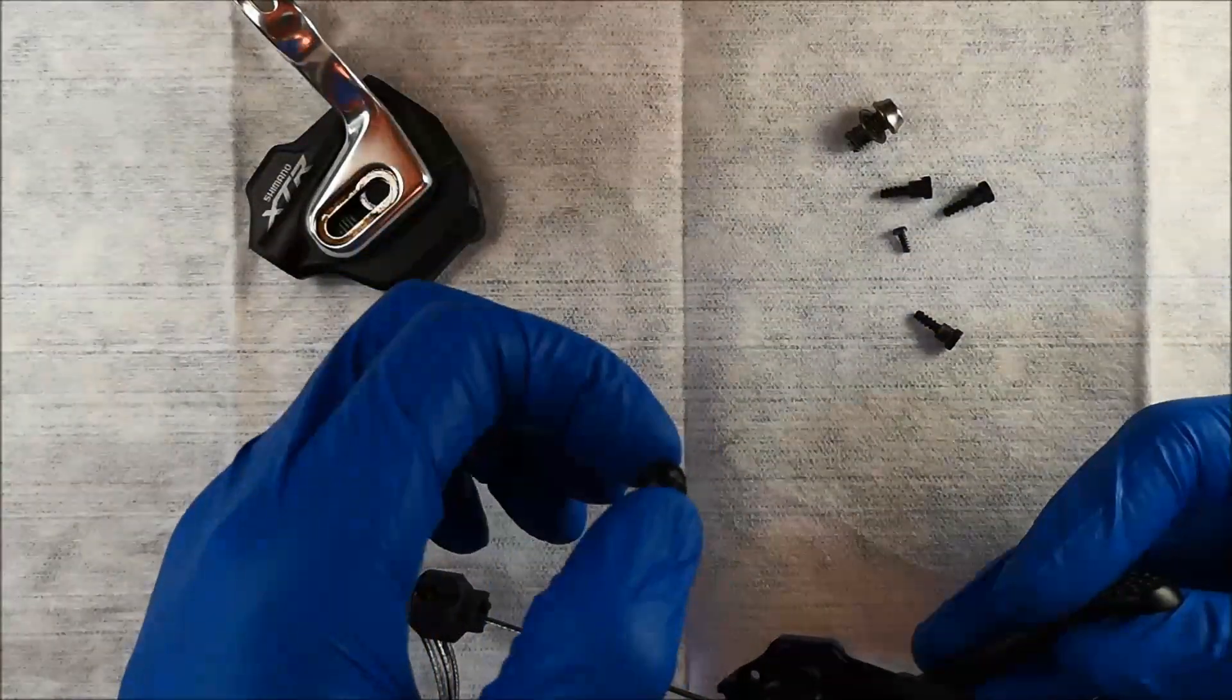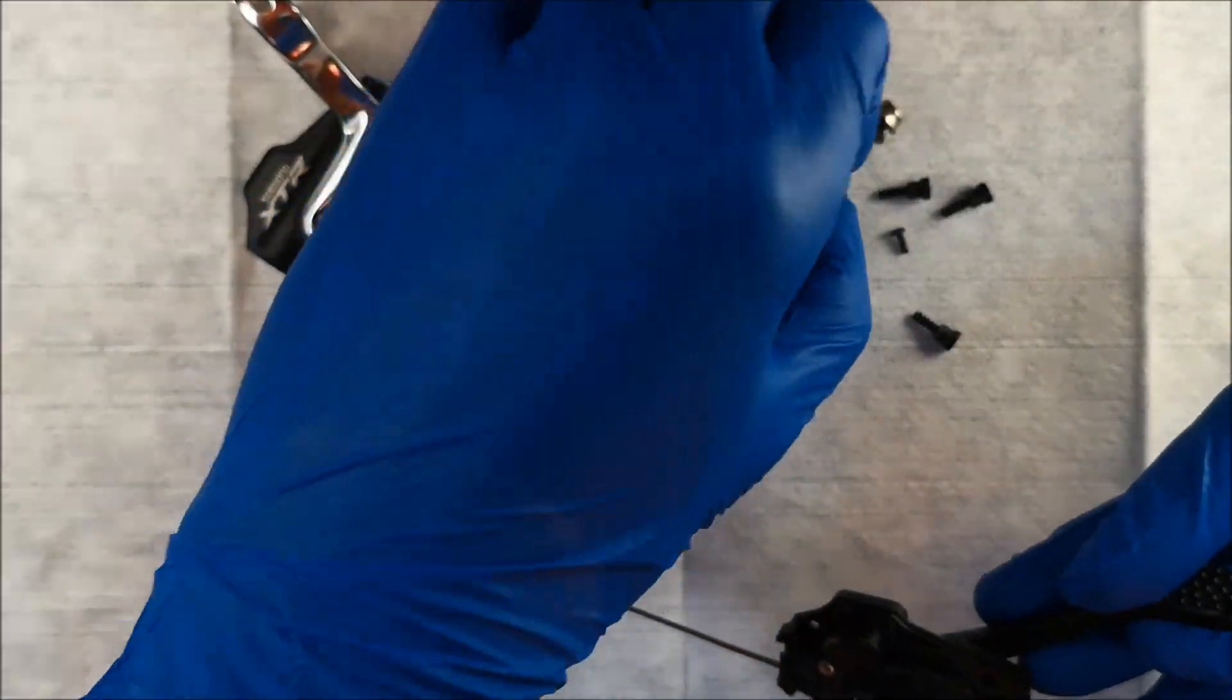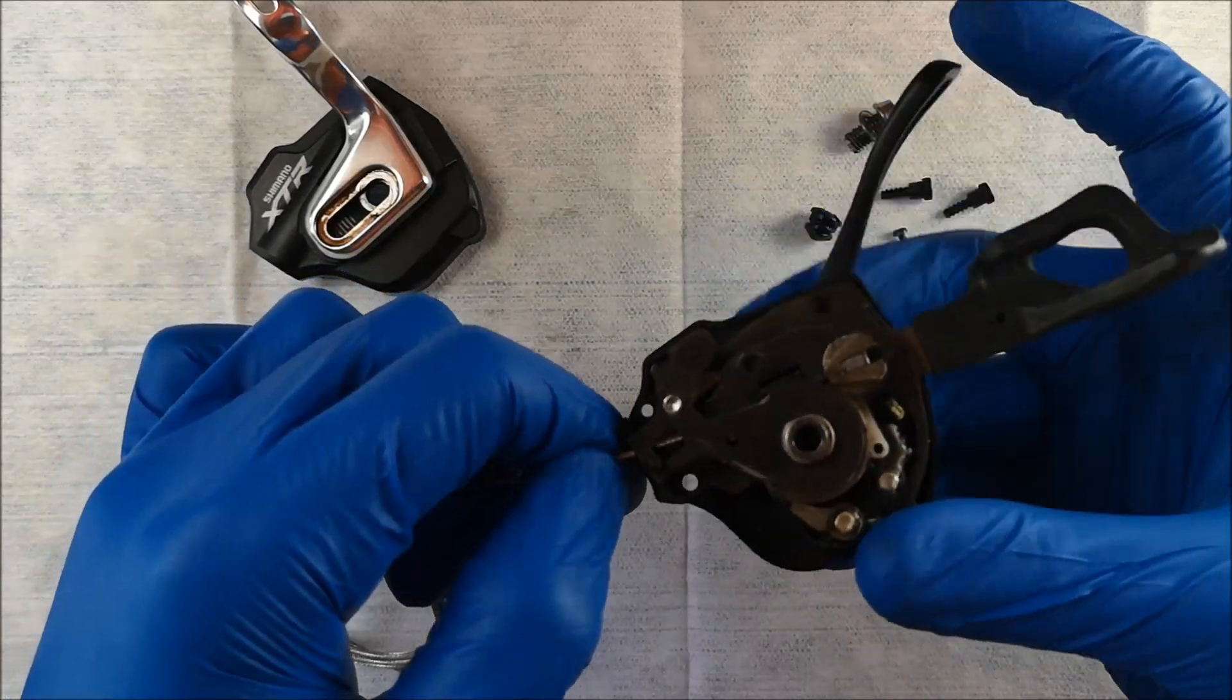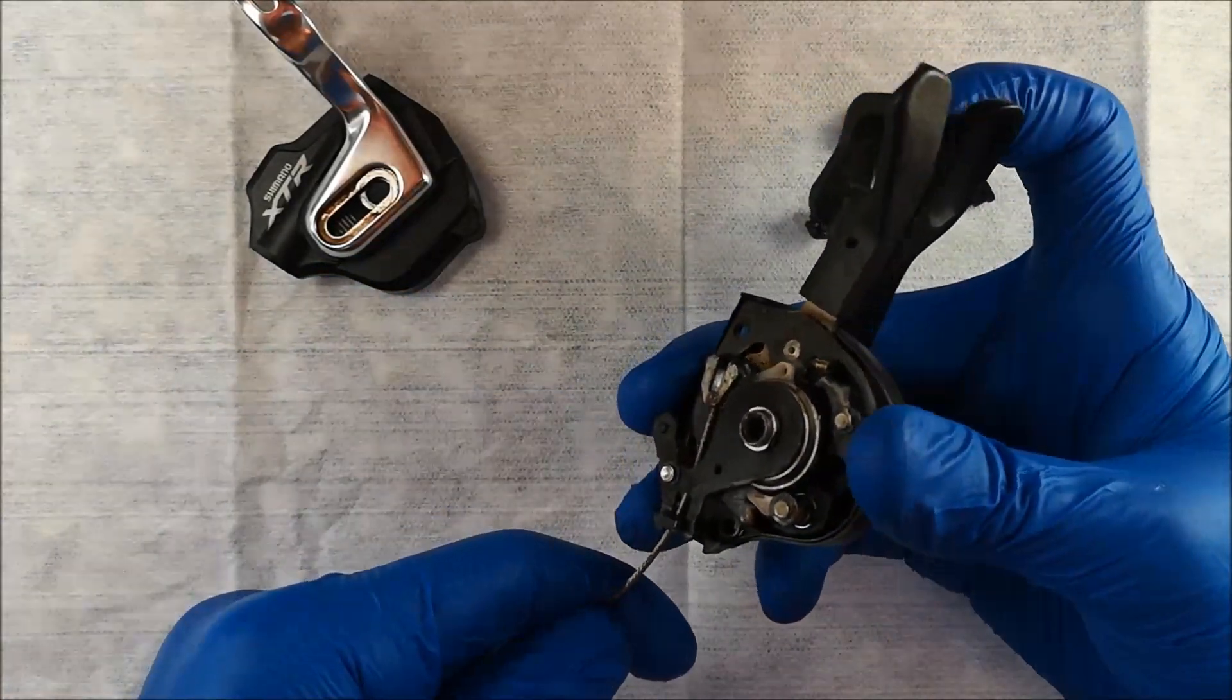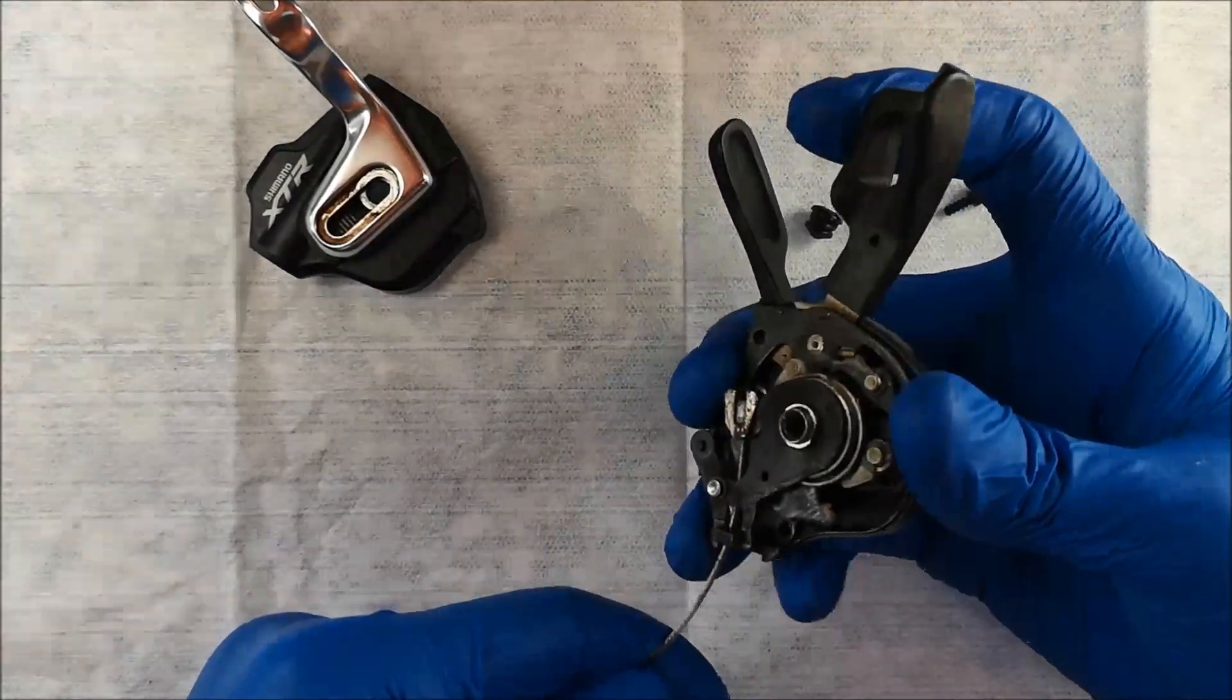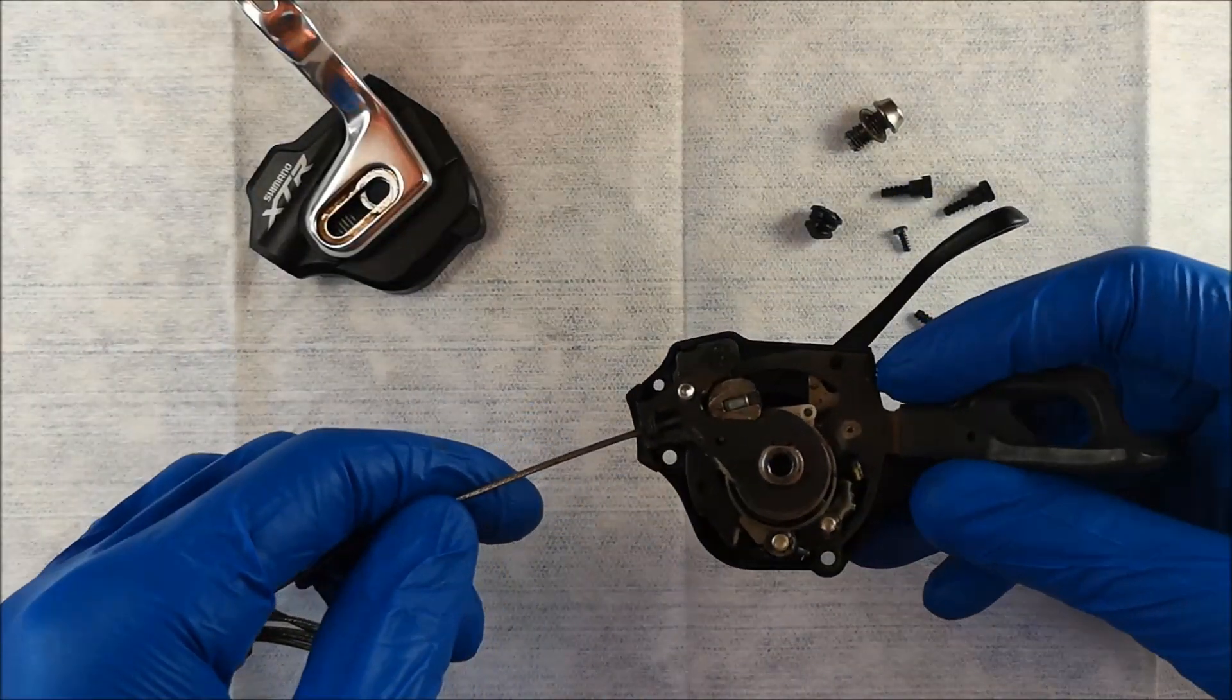What I also forgot to mention is you need to remove the little cover screw where you insert the cables. So as I said in the last video, what we're looking for in here is the mechanism that does the ratcheting. So when I pull the shifter, we're looking for that mechanism that catches the spool.